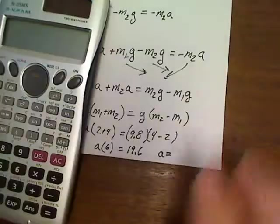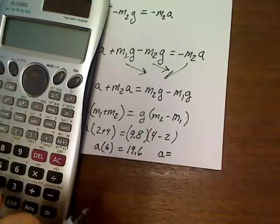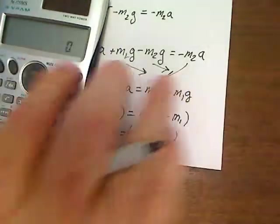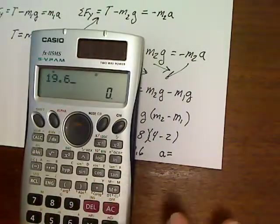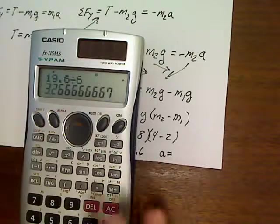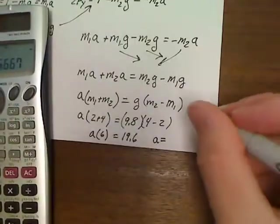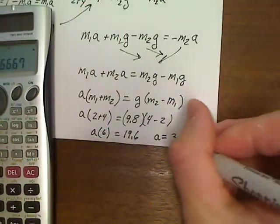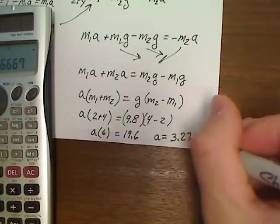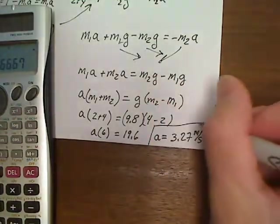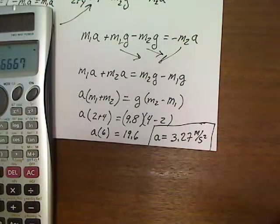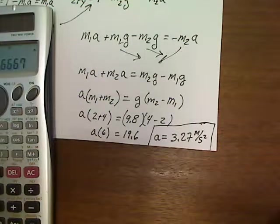I'm kind of running out of room. A is going to be equal to 9.8 times 4 minus 2 divided by M1 plus M2. Let's find out. 19.6 divided by 6 equals 3.26. I'm coming pretty close to it. 3.27 meters per second squared. There's our solution for the acceleration in this problem.